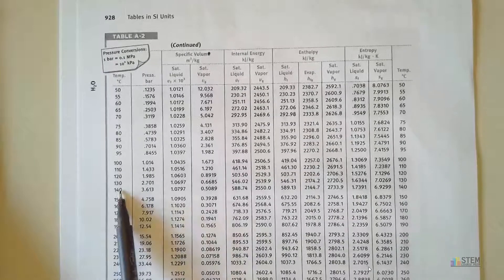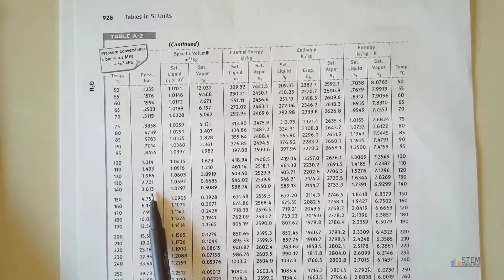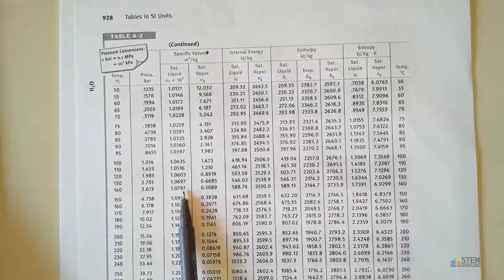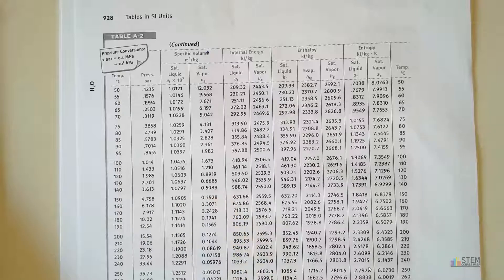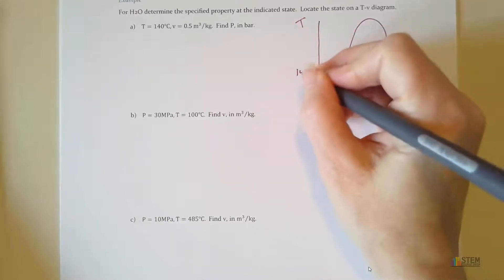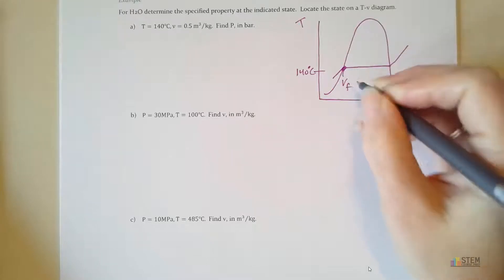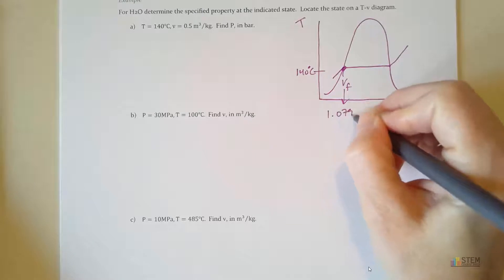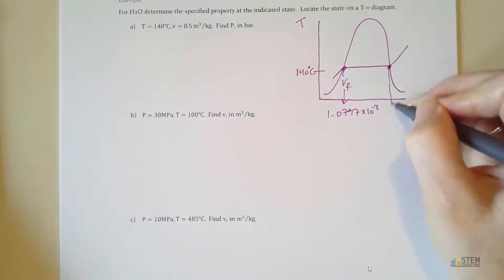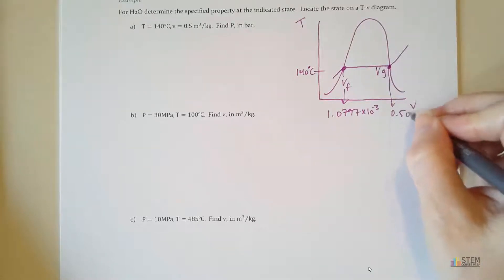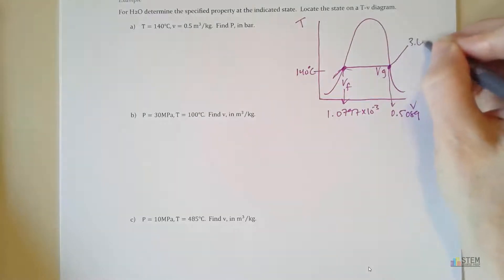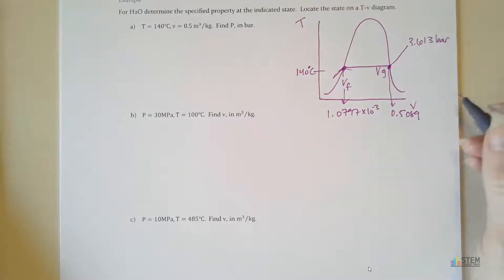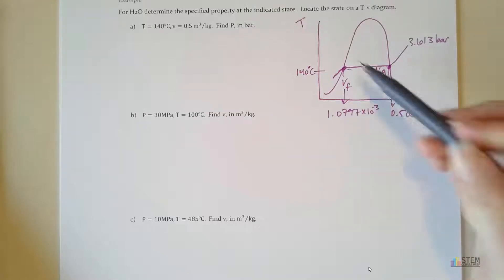Going to 140 degrees Celsius in the table: the pressure is 3.613 bar, VF is 1.0797 (divide by 1000, so 1.0797×10⁻³ m³/kg), and VG is 0.5089 m³/kg. Let's label all of this on the diagram. At 140°C, VF = 1.0797×10⁻³ and VG = 0.5089, and the associated pressure is 3.613 bar. All of this information was obtained from Table A2 using 140°C.